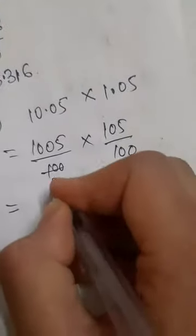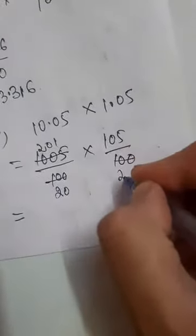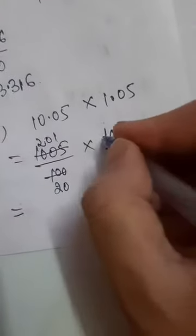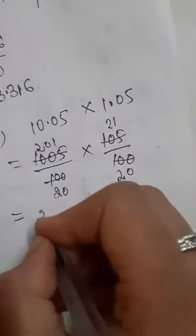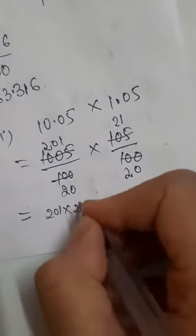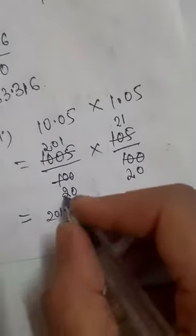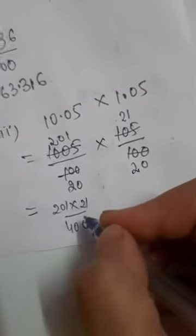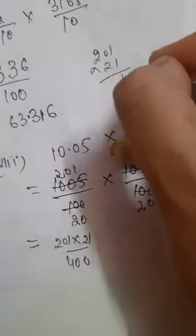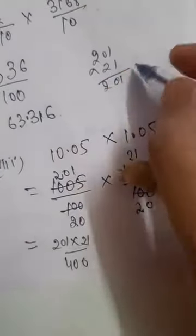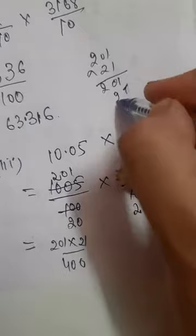5 times 5 is 25, carry 2; 5 times 0 is 0 plus 2 is 2; 5 times 0 is 0; 5 times 1 is 5. Then 0 times everything. Next, 1 times 5 is 5; 1 times 0 is 0; 1 times 0 is 0; 1 times 1 is 1.